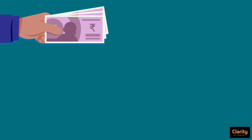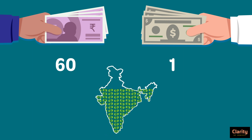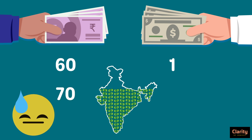The rupee is generally compared with the US dollar. Imagine it was 60 rupees for 1 dollar. Then inflation occurs in India, meaning more rupees in the economy due to excessive money supply. Hence, the value of the rupee reduces with respect to the dollar — 1 dollar might equal 70 rupees now. The rupee depreciates here.